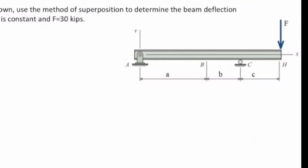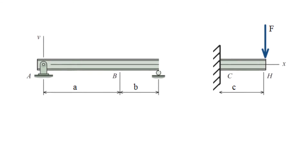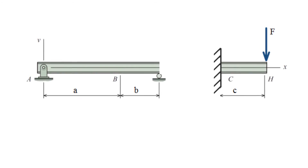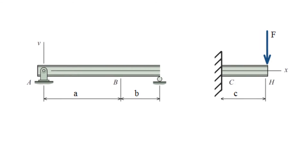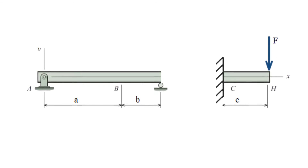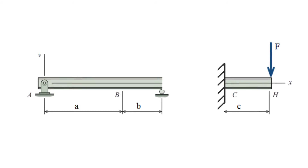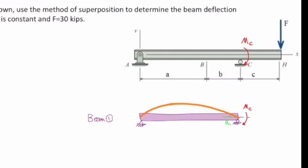How can I determine deformation in this beam? Similar to the previous case, I will split this structure into two parts: the simply supported beam and the cantilever beam. The key point is that if you look at the original structure, there is not any force acting on the simply supported beam from A to B. We might say it's not deforming at all, but that's not true — because the force acting on the right side is causing a moment on this beam, shown in red to emphasize it's an internal moment that transfers from the cantilever beam to the simply supported beam.